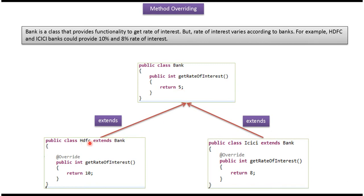For example, STFC bank can provide a rate of interest of 10%, and ICICI bank can provide a rate of interest of 8%. Here you can see class STFC which extends the bank class and overwrites the getRateOfInterest method and returns 10. STFC is the child class, bank is the super class, and the STFC subclass overwrites the getRateOfInterest method. This is an example of overriding.